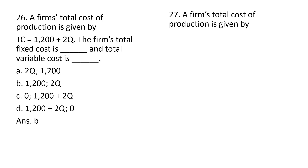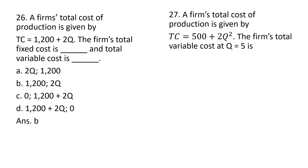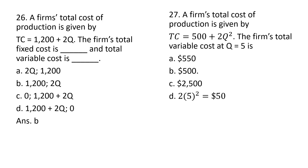Question 27: a firm's total cost of production is given by the following equation. What is the firm's total variable cost at Q equals 5? The correct answer is D. We take the total variable cost part of the equation, which is 2Q squared, and plug in 5: 2 times 25 equals $50. Answer choice D.